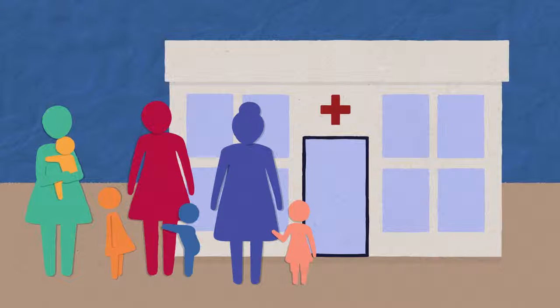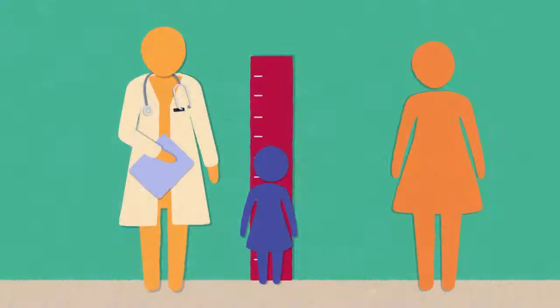At the clinic, we are identifying a lot of children who are too short for their age. Almost one out of every four children we see is stunted. Stunting arises from prolonged undernutrition that affects a child's physical and mental growth and development.